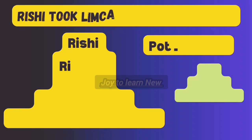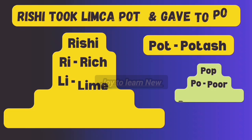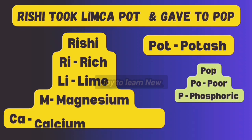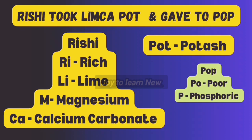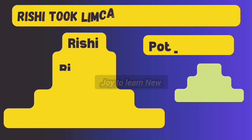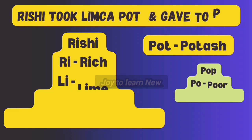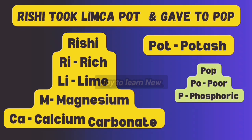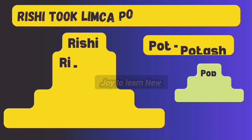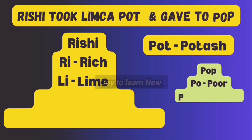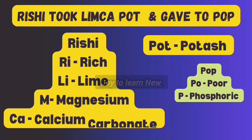The next shortcut is 'Rishi took Limca pot and gave to Pop.' Ri represents Rich. In Limca: Li represents Lime, M represents Magnesium, Ca represents Calcium Carbonate. Pot/POT represents Potassium. So Black Soil is rich in Lime, Magnesium, Calcium Carbonate and Potassium. Now look at 'Pop': PO stands for Poor and P stands for Phosphoric — Black Soil is poor in Phosphoric content. Rich in Lime, Magnesium, Calcium Carbonate and Potash; poor in Phosphoric content.